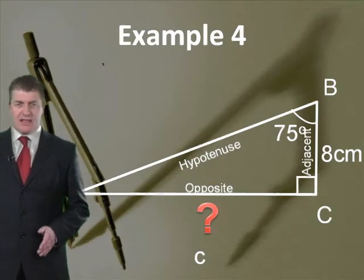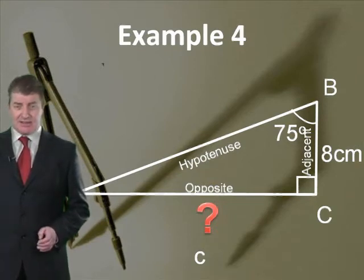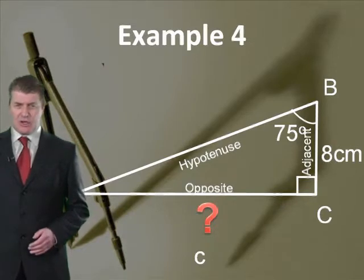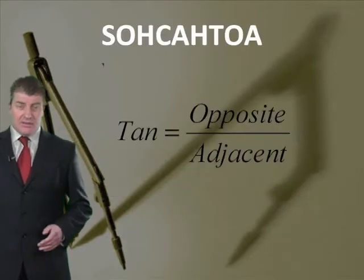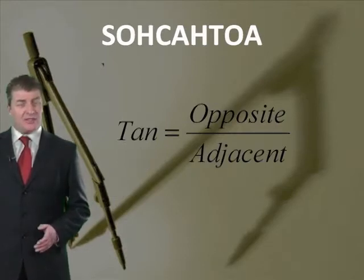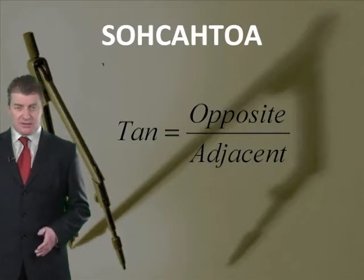Determine the length of AC when you know that BC is 8cm and the angle at A is 75 degrees. Let's apply the rule SOHCAHTOA. In this case we know the length of the adjacent and we know the angle. We need to determine the length of the side opposite the angle, so we're going to use the tangent.